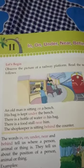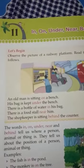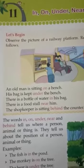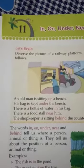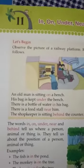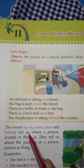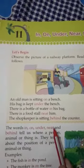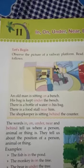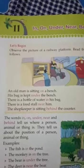The words in, on, under, near and behind tell us where a person, animal or thing is. They tell us about the position of a person, animal or thing. We know where the position is.